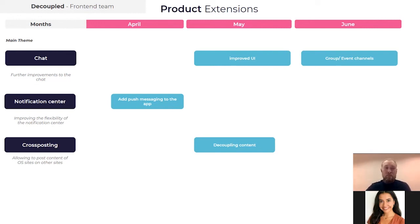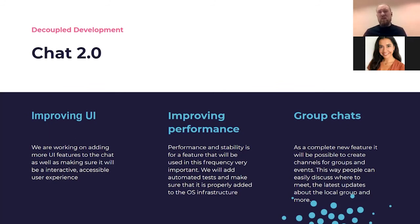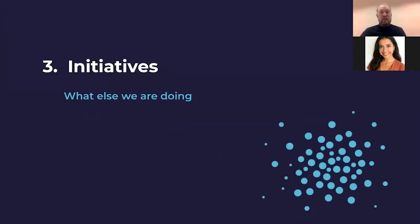This is a very interesting step that really shows the possibilities of the decoupled process and developing these GraphQL APIs, and delivers a nice first showcase of where we want to go with this process. Quick summary of the chat work: improving the UI, improving performance, adding automated tests, and implementing the chat within the Open Social infrastructure — because as a feature used by a lot of people with a lot of traffic, we really want to make sure everything goes smoothly, testing is on point, and we know what impact it will have on different platforms. Plus the group channels to be implemented.